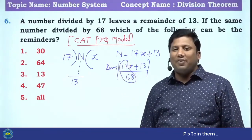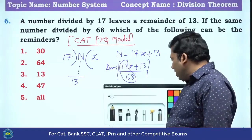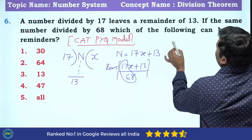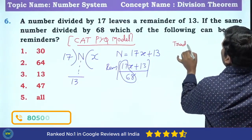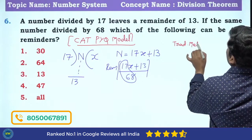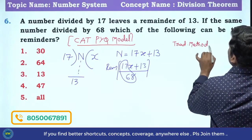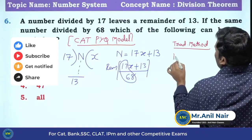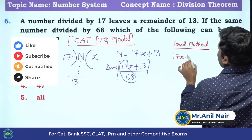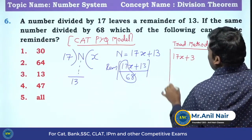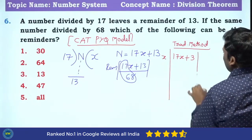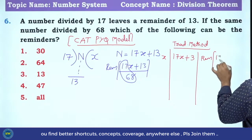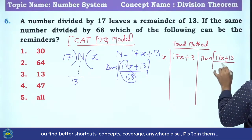Now it is not perfectly divisible by the denominator. First we will do the traditional method, then I will tell you Anil Nair's method. So we have 17X plus 13 divided by 68, where X is the quotient and 13 is the remainder.